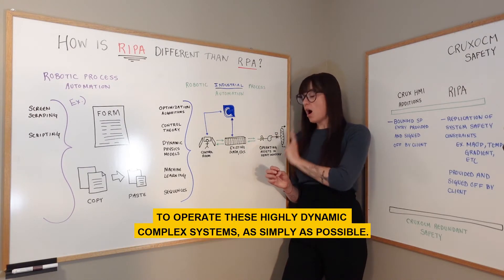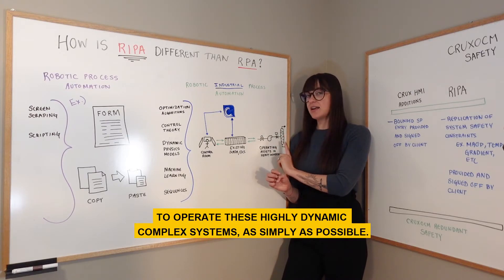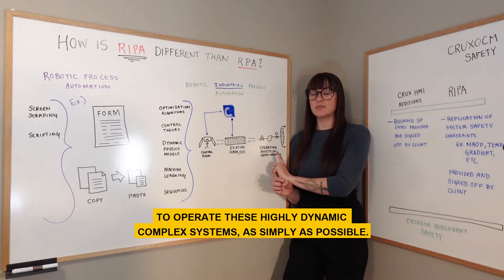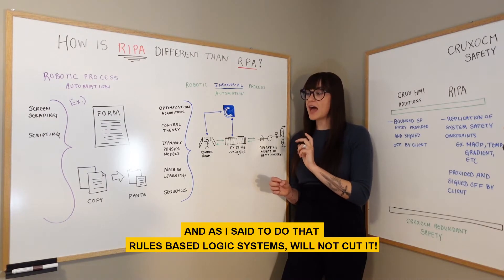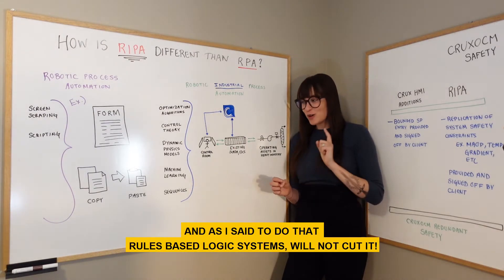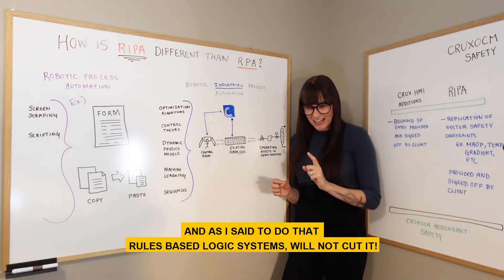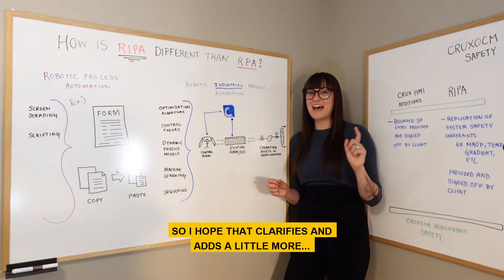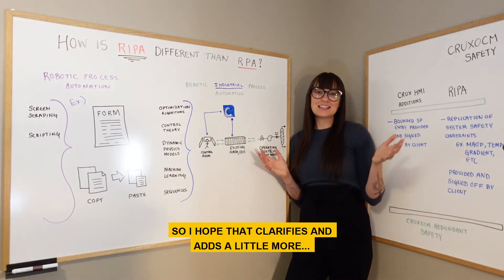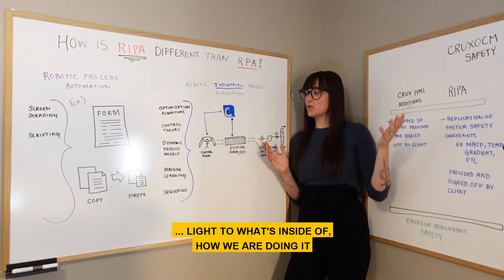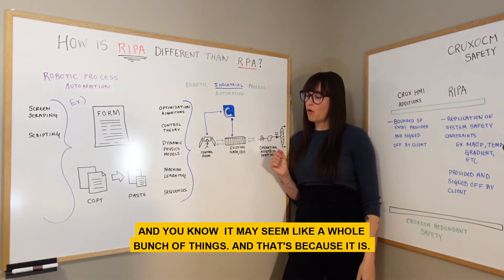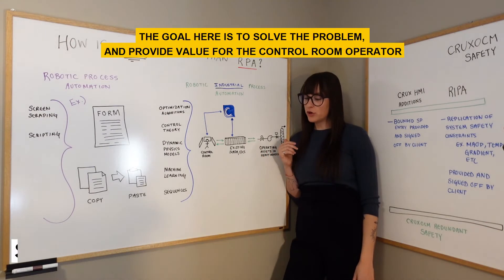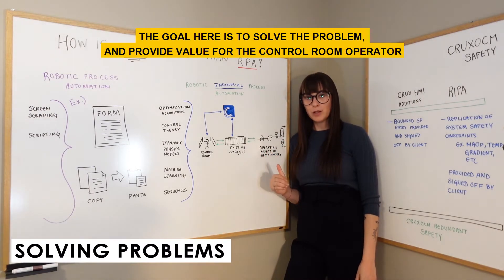Robotic industrial process automation operates these highly dynamic, complex systems as simply as possible. As I said, rules-based logic alone will not cut it. I hope that clarifies and sheds a little more light on what's inside — how we're doing it. It may seem like a whole bunch of things, but that's because it is. The goal is to solve the problem.